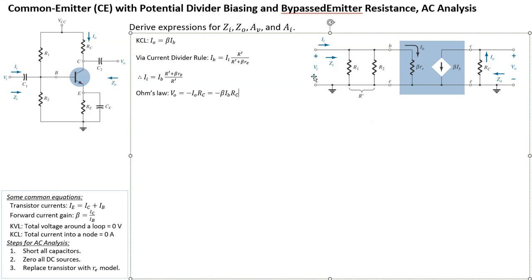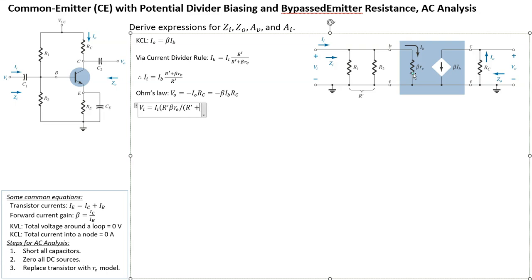On the vi side, the current ii flows through three resistors in parallel. Using Ohm's law, vi equals ii times (R prime parallel with beta*re), which works out to ii times (R prime × beta*re) divided by (R prime + beta*re).